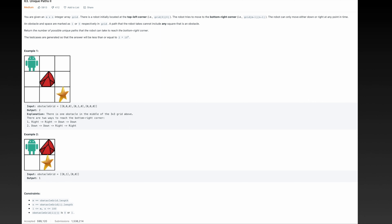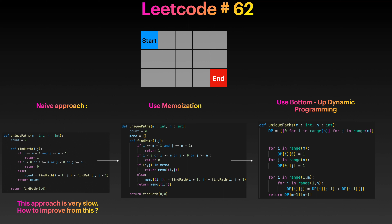Here is the solution for problem 62. I have three approaches for this problem. The first thing that should come to your mind is: to go from here to here and count how many unique paths we have, we use recursion. Every time we reach the end point we return one, and then we go all the way back up to our initial position.